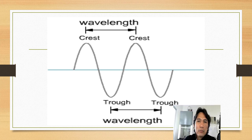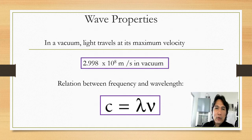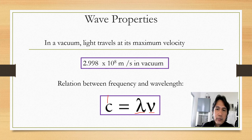As shown earlier, wavelength is the distance between crest to crest. Light in a vacuum travels at the speed of 2.998 times 10 to the positive 8 meters per second. This is the speed of light, or the velocity in vacuum. We can relate the speed of light to frequency and wavelength: C, which is the speed of light, is equal to lambda times the frequency.